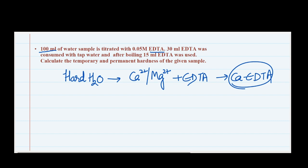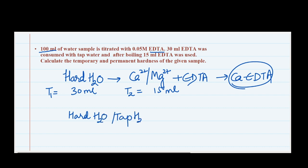The numerical says: 100 ml of a water sample — that is, a hard water sample — is titrated with 0.05 molar EDTA (ethylene diamine tetra acetic acid). 30 ml of EDTA was consumed with tap water, and after boiling, 15 ml of EDTA was used. So there are two titration readings: titration one is 30 ml using normal tap water, and titration two is 15 ml using boiled water.